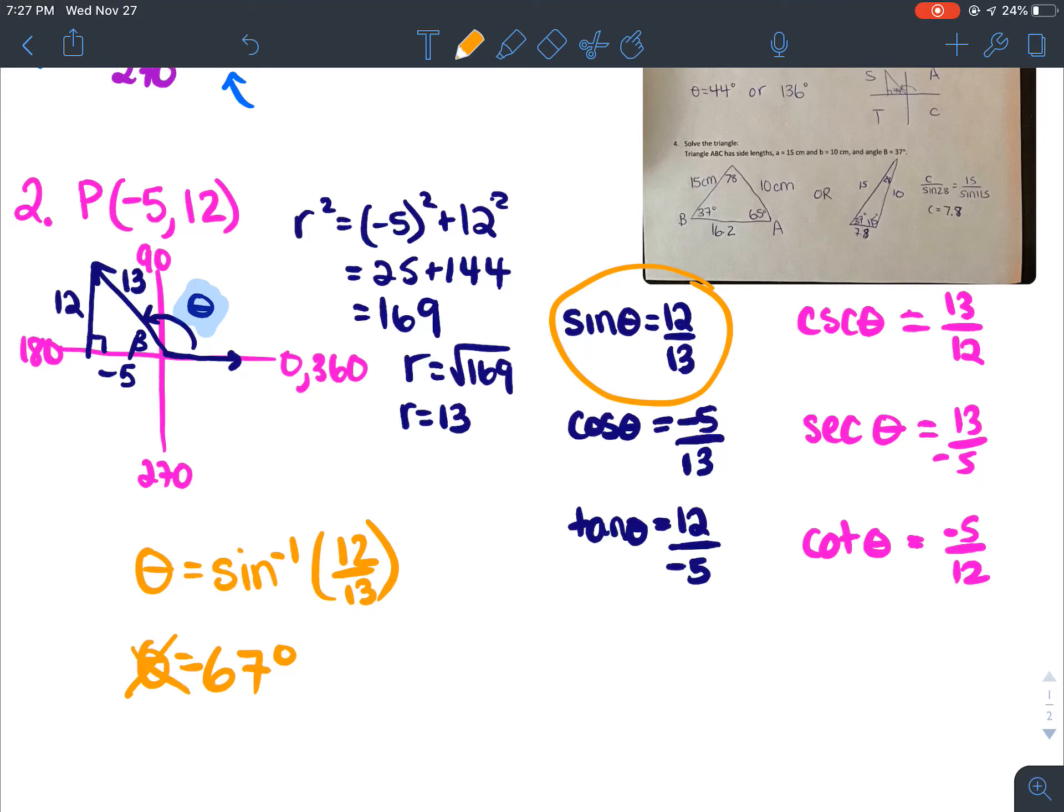which clearly is not theta, because it's way too small. Theta should be something between 90 and 180. So now we know 67 is actually our related angle,